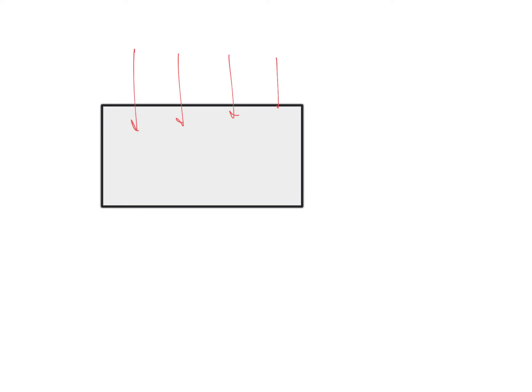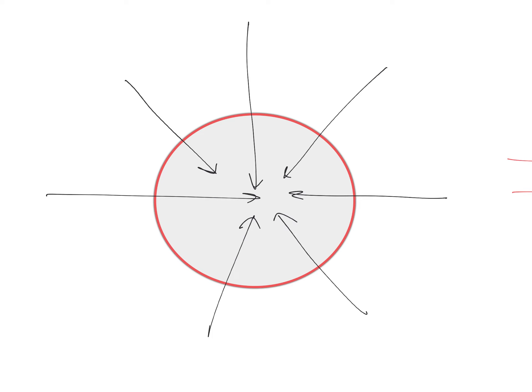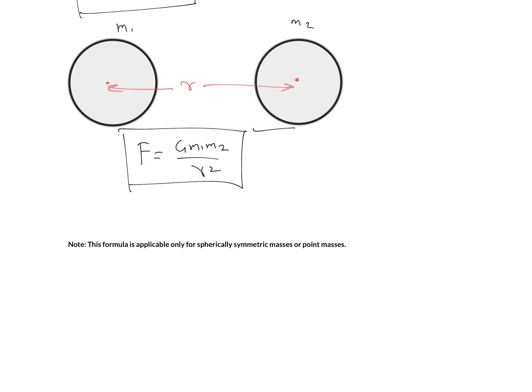The reason is the direction of the gravitational field. For a rectangular shape object, the gravitational field lines point in various directions and do not all converge to one particular point. But for a spherical shape object, all gravitational field lines appear to concentrate at its center. So for a sphere, you can assume the total mass is at the center; for other shapes, you cannot.